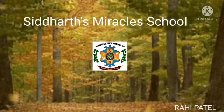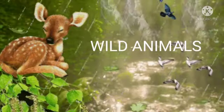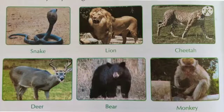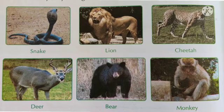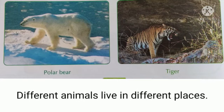Hello everyone, today we are going to learn about wild animals. Animals like lion, tiger, leopard, deer, snake, zebra, and elephant that live in the natural environment of forests are called wild animals. Different animals live in different places.